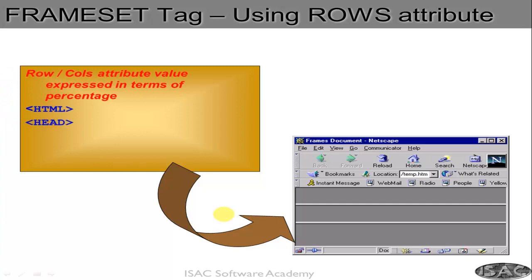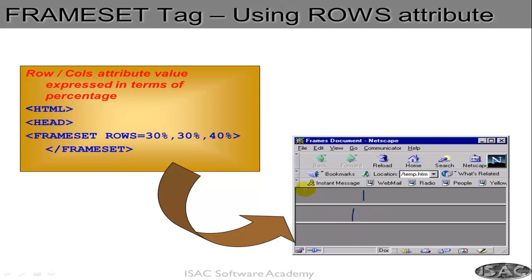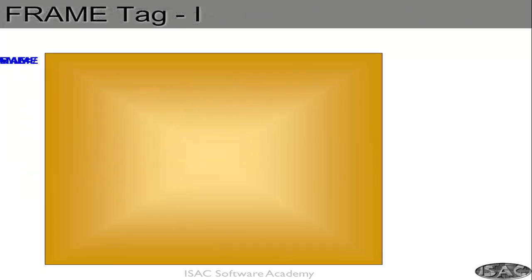You can create rows instead of columns in the same way. You can specify 200, 300, 400 pixels, or you can use percentages: 30%, 30%, and 40%. So this one takes 30% of the total, this one 30%, and this one 40%, making 100%. You can use either pixels or percentages for both rows and columns.